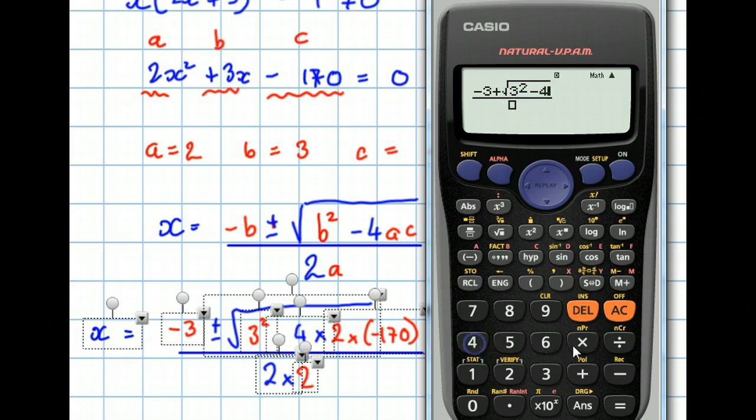take away 4, times 2, times minus 170. And it's given it as 17 over 2, which is 8.5.